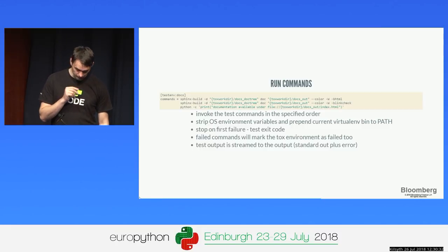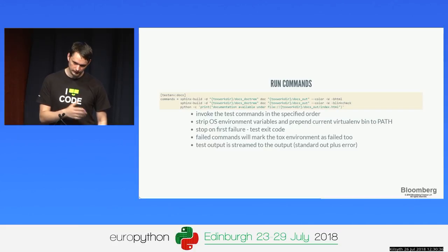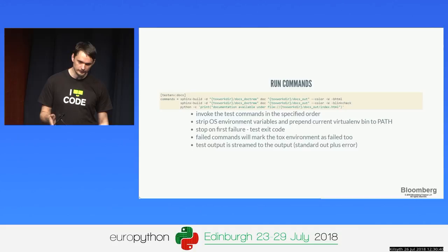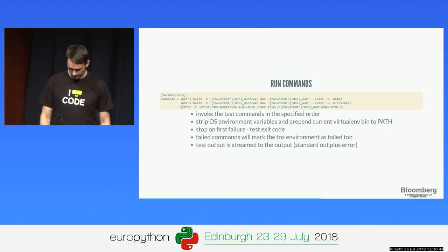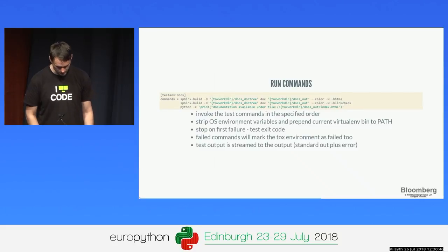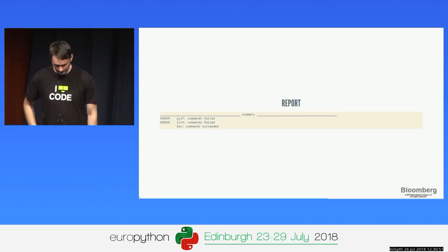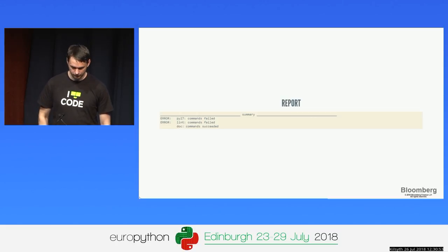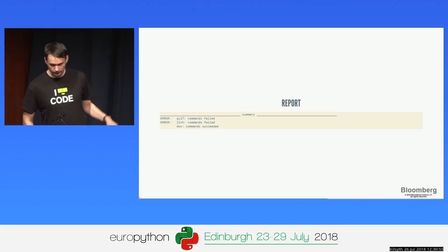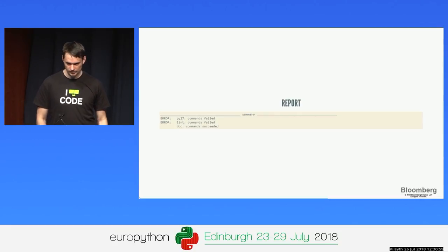We stream whatever your tool outputs on stdout. This can be configured, but by default we stream output so you can see what the tool said and take action. Finally we print a nice report. In this example you can see that two environments failed — the test and the linting — but the documentation generation finished with success.